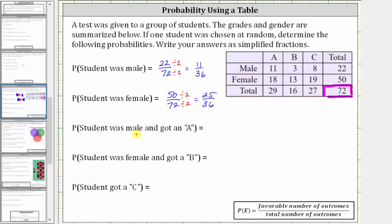The next probability is the student was male and got an A. Looking at the row of males, the number of males that received an A is 11. 11 is the favorable number of outcomes out of a total of 72 outcomes. Therefore the probability is 11 divided by 72, or 11/72, which doesn't simplify.